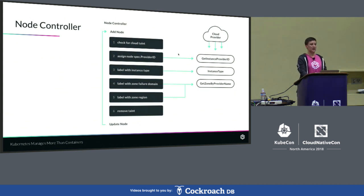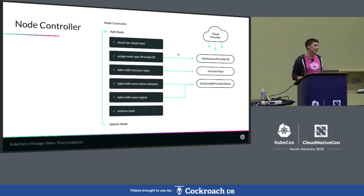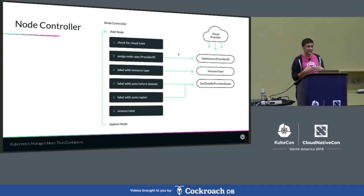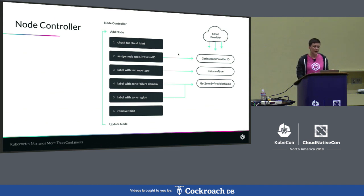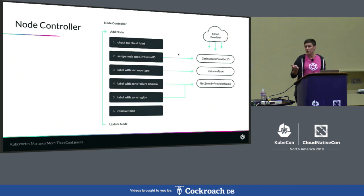This is what the node controller looks like in a generic way. The node controller has a controller which has a sync handler, and all that sync handler does is take the state that your cluster is in and compare it to a desired state. When it gets into the sync handler, it is going to check that it has that cloud taint and has not been processed. Then it's going to go and look at your CCM and get that instance by the node instance that has been registered in Kubernetes. It will assign a provider ID to the spec object of your node so that it knows how to map it and get more information about it in the future.